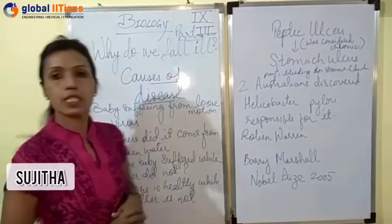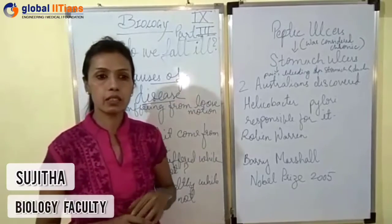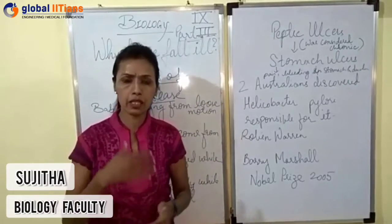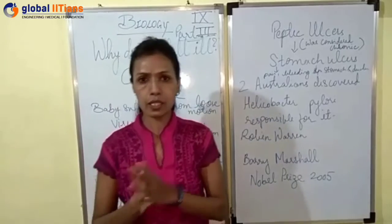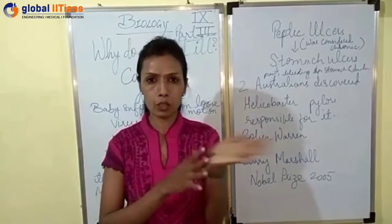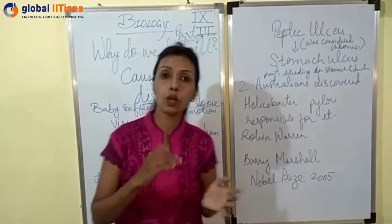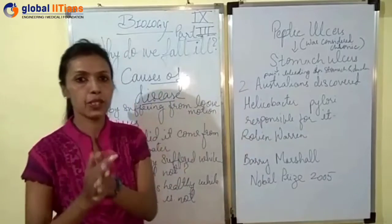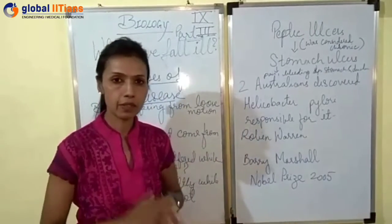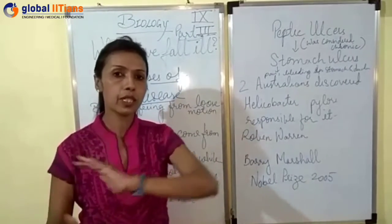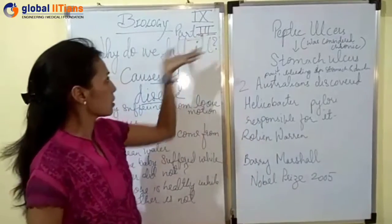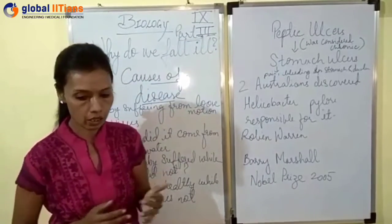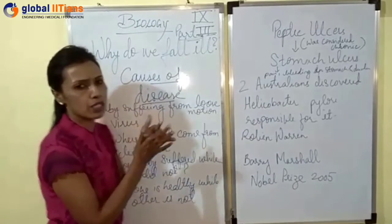Hello students. We started with the signs and symptoms, and acute and chronic diseases. Based on the duration of the disease — how long it will be prevailing in a patient — we divided them into acute and chronic. Now, in part 3 of the same topic, we are going to discuss what causes diseases.